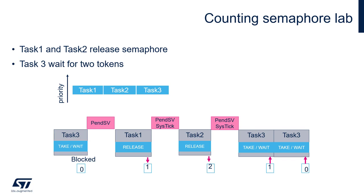In our example we will use the following scenario. There are three tasks: task 1, task 2 and task 3. All of them have the same priority, for example OS priority normal. Additionally, there is one counting semaphore with its max count value set to 2. Task 1 and task 2 will release the semaphore while task 3 will wait for two tokens. At the beginning there are no free tokens in the semaphore, so task 3 is blocked.